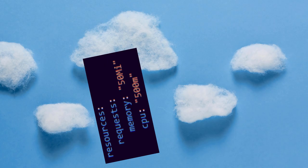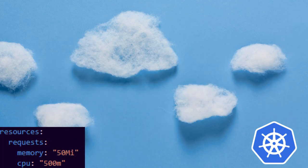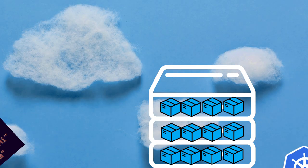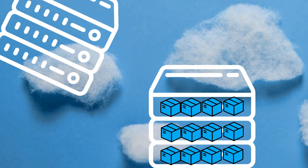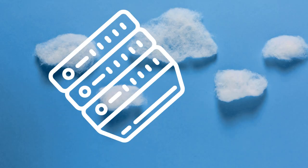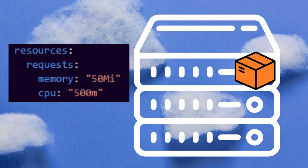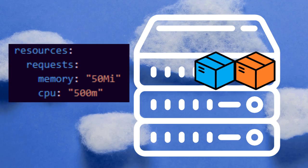When we set resource request values, the scheduler knows how many pods it can fit onto a node. When the node becomes full, the cluster autoscaler can add a new node to allow scheduling to continue. When a pod uses too much of its requested CPU or memory, the pod autoscaler can add another pod to give it more resources.